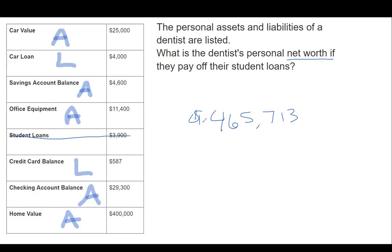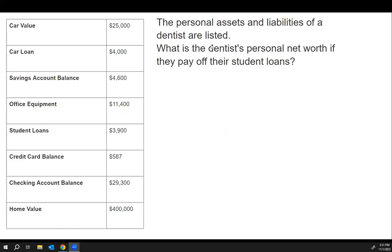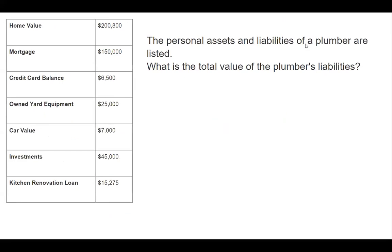We add up the assets and we subtract the liabilities. The personal assets and liabilities of a plumber are listed. What is the total value of the plumber's liabilities?